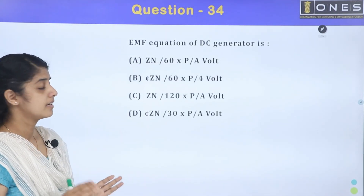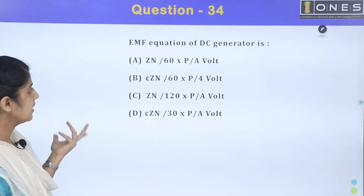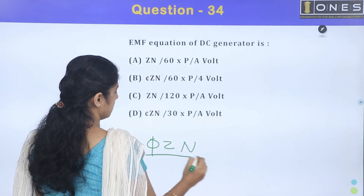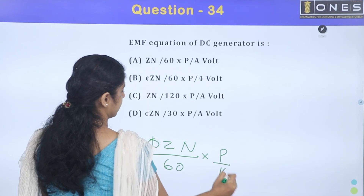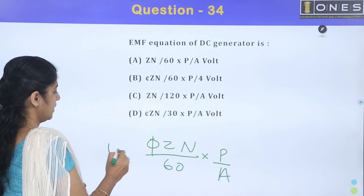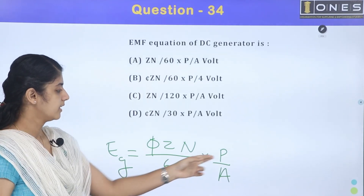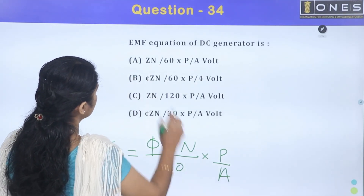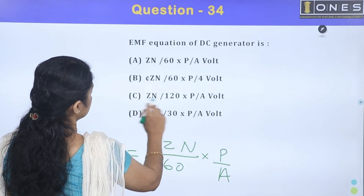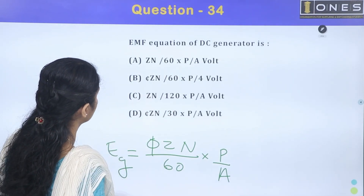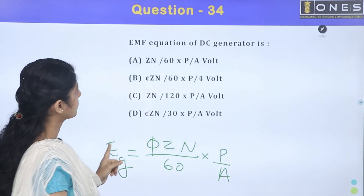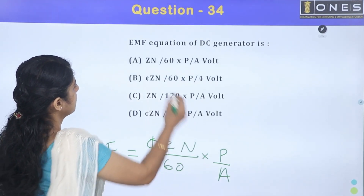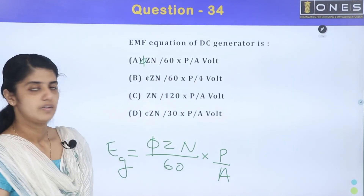Next question: EMF equation of a DC generator. E is equal to φZN × (P/A) divided by 60. That is, φZNP divided by 60A. The correct answer has φZNP/60A. Note: if φ is missing in an option, that option is incorrect.